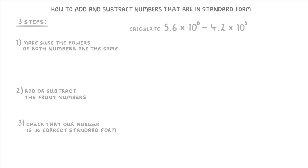Let's look at this question: 5.6 times 10 to the power of 6, minus 4.2 times 10 to the power of 5. We just need to work through the three steps. To start with, we need to make sure the powers are the same for both — and this time they're not, because 5.6 times 10 to the 6 has a power of 6, but 4.2 times 10 to the 5 only has a power of 5. To fix this we need to change one of our numbers.